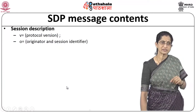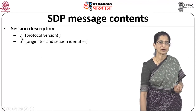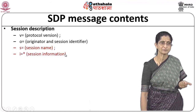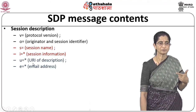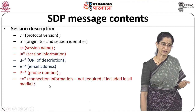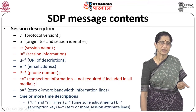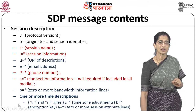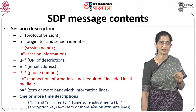The session description fields include: V for protocol version, O for originator and session identifier, S for session name, I for session information, U for the URI of the description, E for email address, P for phone number, C for connection information (not required if included in all media), and B for zero or more bandwidth-related information lines. There can be one or more time descriptions using T, R, Z, or K lines.